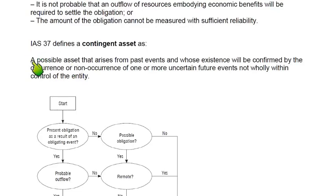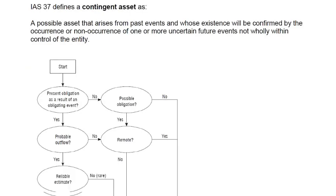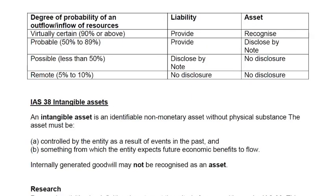A contingent asset is a possible asset that arises from past events whose existence will be confirmed only by the occurrence or non-occurrence of one or more uncertain future events not wholly within the control of the entity. It is an uncertain asset — we are not sure how much money we will receive or when.